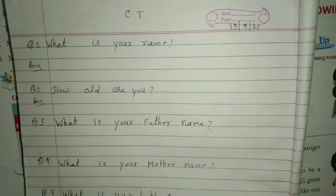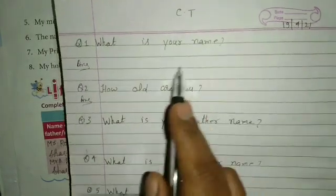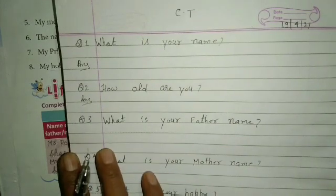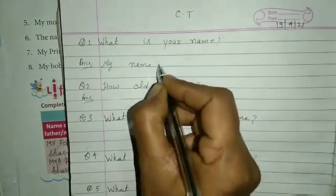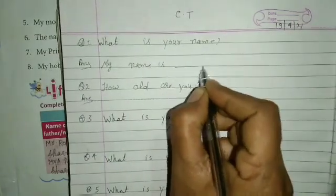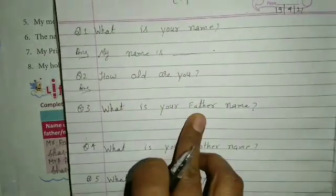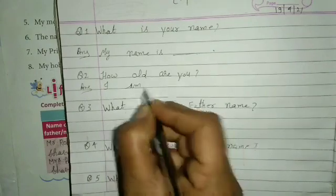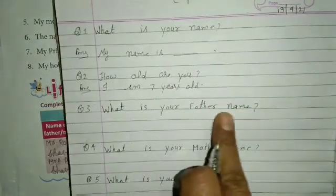About myself — Lesson 1. Question: what is your name? My name is... How old are you? I am seven years old.